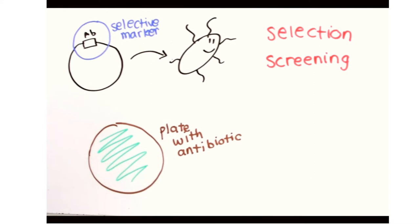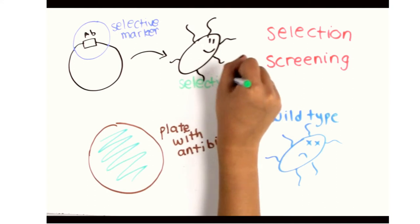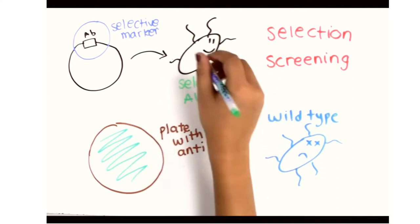This way, only the E. coli cells that have your plasmid transformed in them will grow, and the wild-type cells will die due to the antibiotic present in the media.